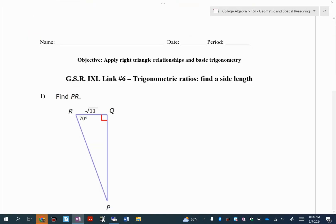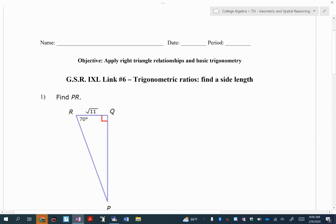The same thing with SOHCAHTOA, but this is a little bit different because instead of finding the trig ratio, in this case it might ask you to find the actual side length using that ratio.